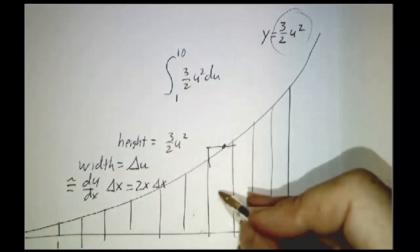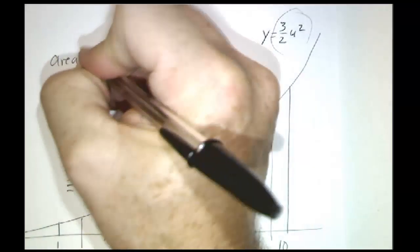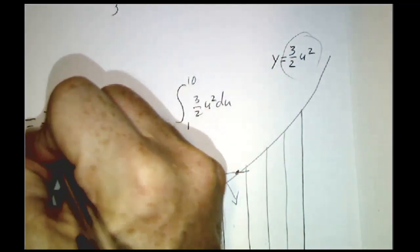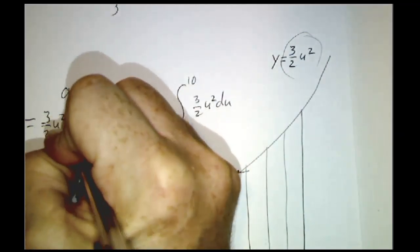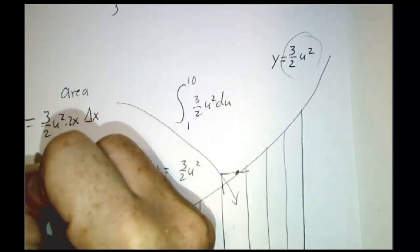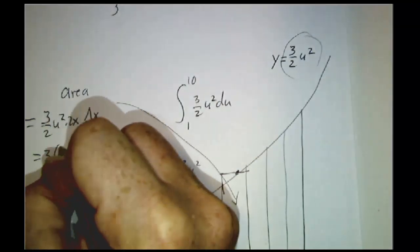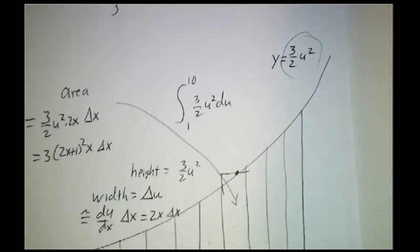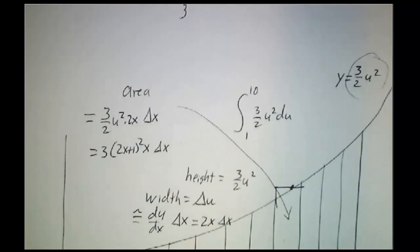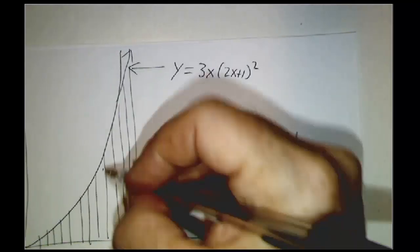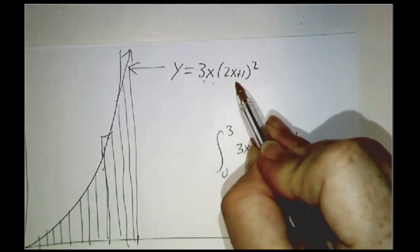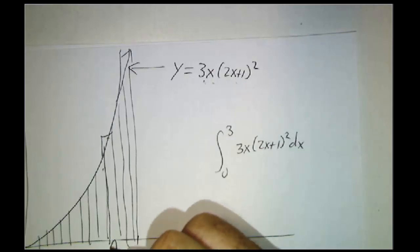So the area, if you want the area of the strip, well that is 3 halves u squared times 2x delta x. In other words, it's 3 times 2x plus 1 squared times x times delta x. Up here, that's exactly the area of the strip over here. The height is 3x, 2x plus 1 squared. And the width is delta x.